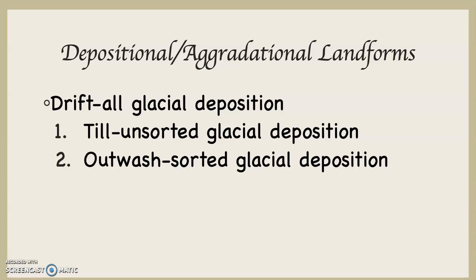Drift is further sub-categorized into till and outwash. Till is unsorted glacial deposition. When a glacier picks material up and transports it, it does not deposit in a hierarchy the way running water and wind do. With a glacier, everything gets picked up at the same time, transported at the same rate, and dropped at the same moment — big stuff, little stuff, hodgepodge, willy-nilly. That material deposited directly by glacial ice we call till.